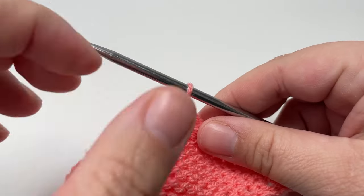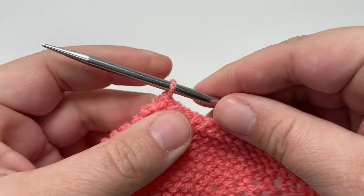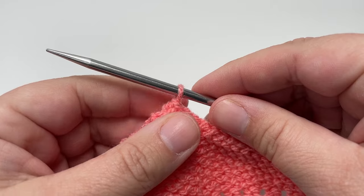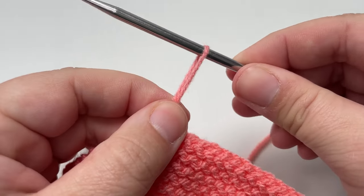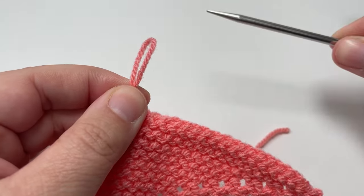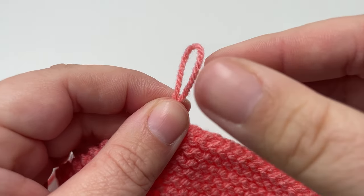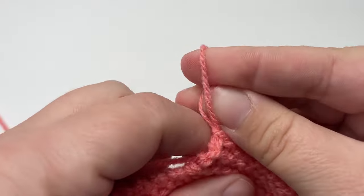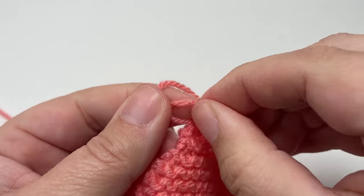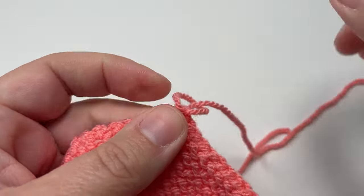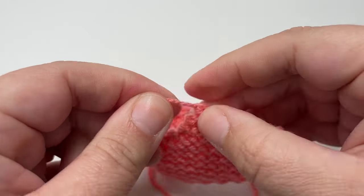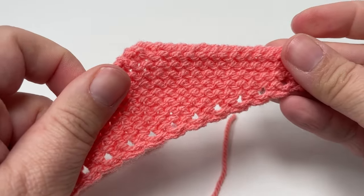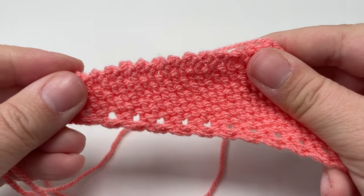When you've cast off all the way along and you have this one loop left on your right hand needle, you can break your yarn and then pull up this loop to make it slightly bigger and remove your knitting needle. You don't need that anymore. And then just to give a nice secure finish, I like to lift the yarn tail through that larger loop and pull on it to give it a nice tighten. And then you would go ahead and sew in your ends using your preferred method.